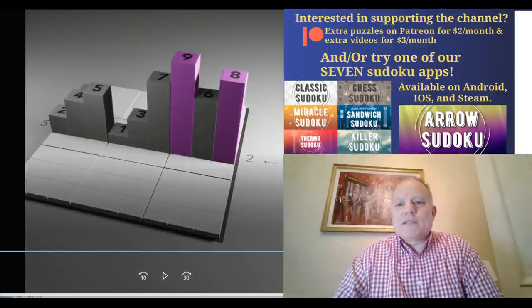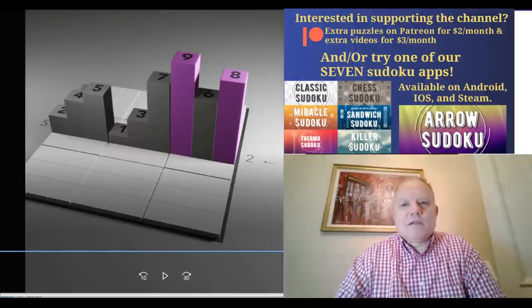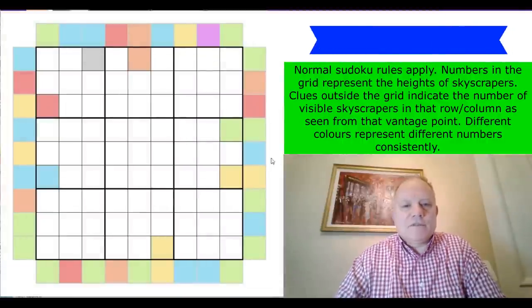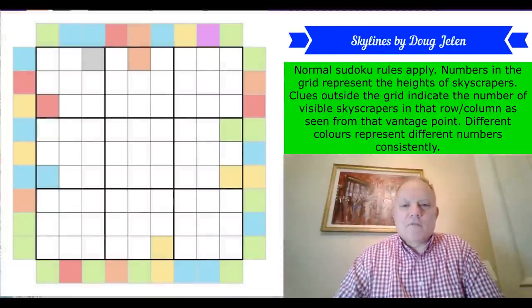From the right, the same row has a totally different number - you only see the eight at the end and then the nine behind it, so the clue in that row from the right will be two. That's how the clues outside the grid work.